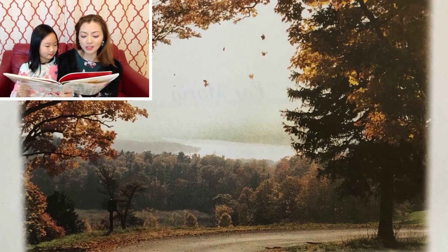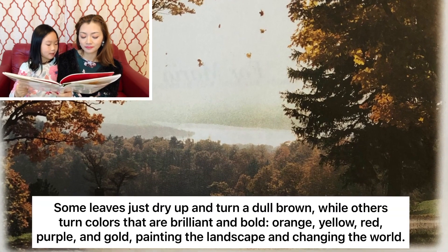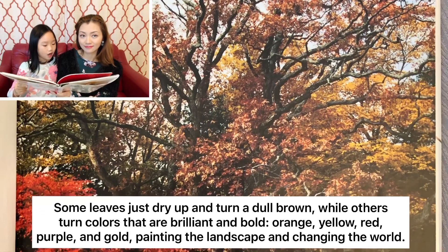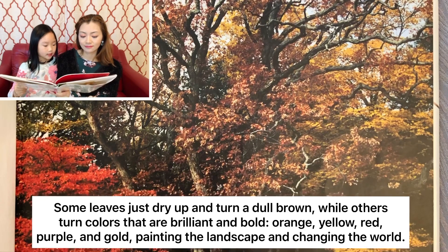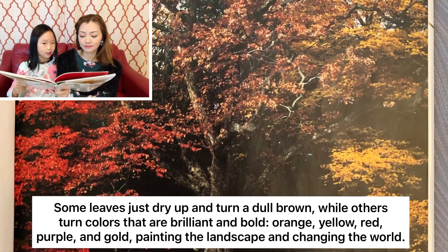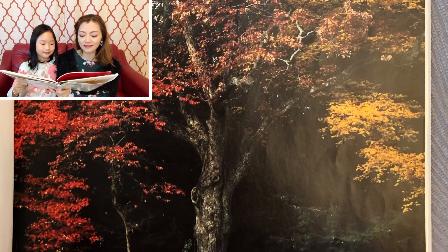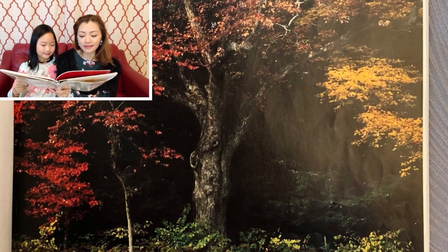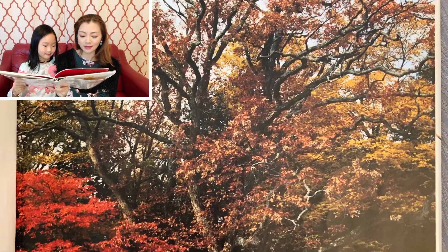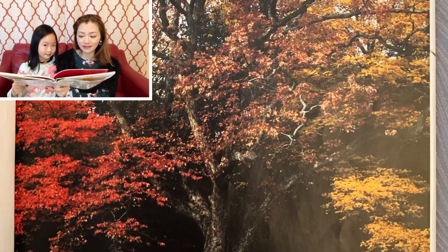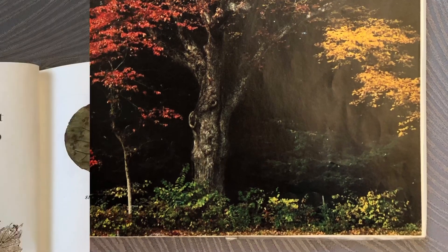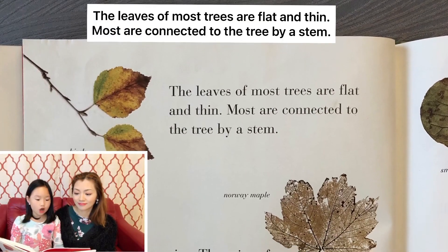但是到了秋天，绿色的叶子渐渐地转成了各种颜色，并且落到了地面。Some leaves just dry up and turn a dull brown, while others turn colors that are brilliant and bold — orange, yellow, red, purple, and gold, painting the landscape and changing the world. 有些叶子开始慢慢地变干，并且变成了暗淡的棕色。但是有一些叶子就会变出各种漂亮的颜色，比如说橘色、黄色、红色、紫色，还有金色。它们给大地涂上了不一样的颜色，并且使整个世界都漂亮了起来。